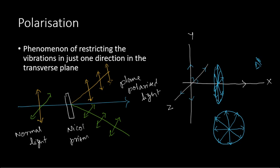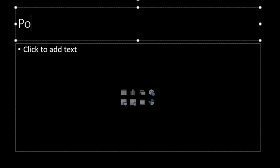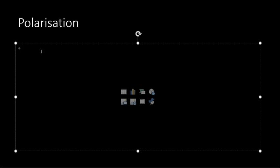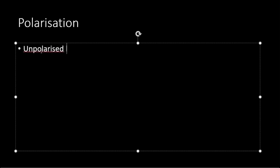There are some lights which are not polarized and they are called unpolarized light. What is unpolarized light? It is a transverse vibration where all the vibrations are set in all possible directions — it is normal light. The unpolarized light will be vibrating in all directions.